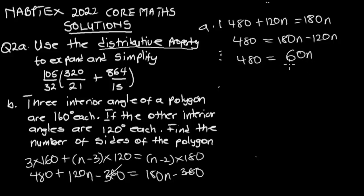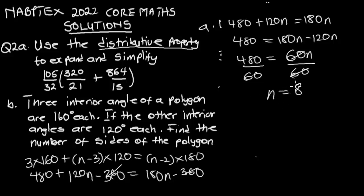We want to make n the subject, so we divide both sides by 60. Therefore n equals 8. Since we let n be the number of sides of the polygon, the polygon has 8 sides. This brings us to the end of this video — thank you for watching.